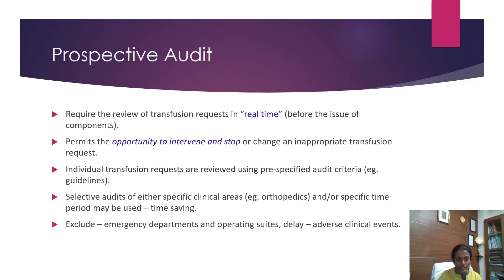A prospective audit requires a review of transfusion requests in real time before the issue of a component. It permits the opportunity to intervene and stop or change an inappropriate transfusion request. Individual records are reviewed using pre-specified audit criteria like guidelines established by the AABB or JCI. Selective audits of specific clinical areas or specific time periods may be used, which could be time-saving. We exclude departments like emergency, ICUs, and other emergency cases as it could lead to adverse clinical events.